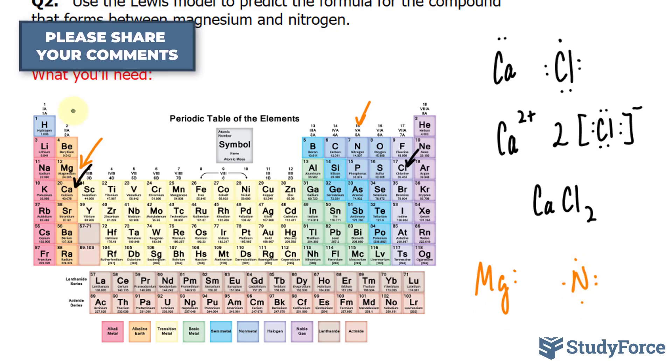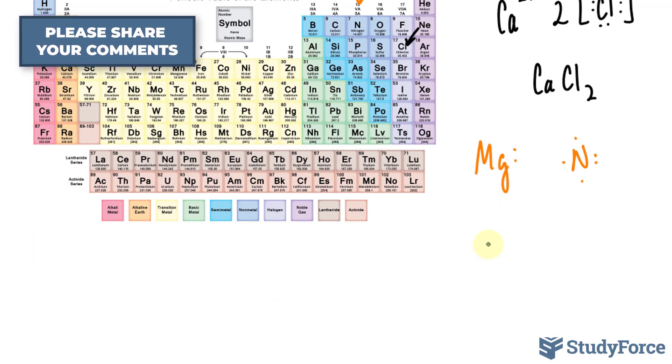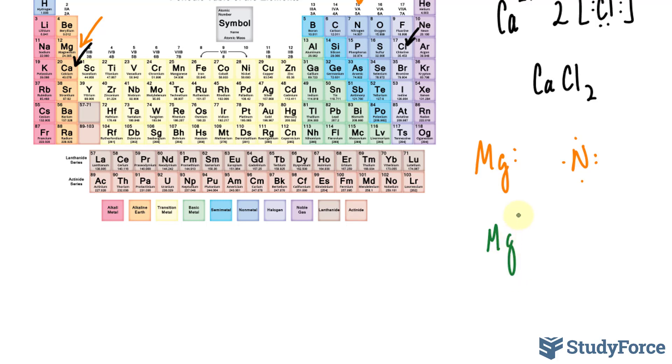Just like calcium, magnesium needs to lose two of its electrons. So it becomes a cation, magnesium two plus, and nitrogen needs to gain three electrons. This is empty, this is empty, and so is this.